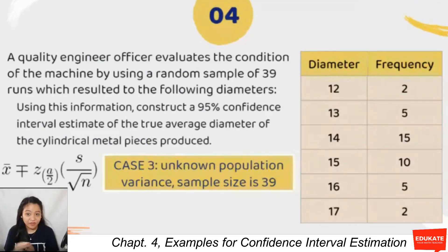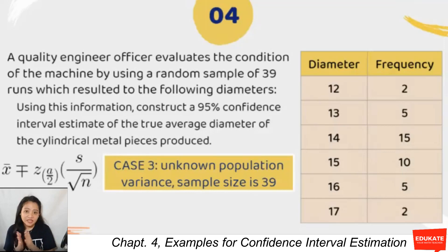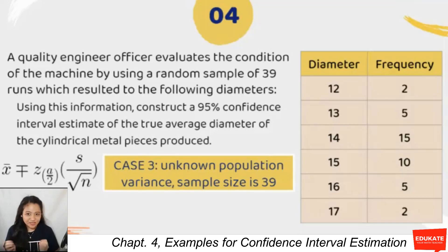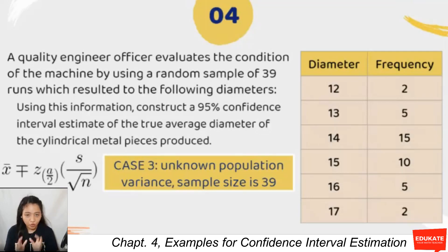Our last example: a quality engineer evaluates a machine using a random sample of 39 runs, with results presented as a table of diameters and their frequencies — for example, 2 runs at diameter 12, 5 at diameter 13, 15 at diameter 14, and so on. We construct a 95% confidence interval of the true average diameter. Checking for population variance — none is given, so we look at cases two and three.